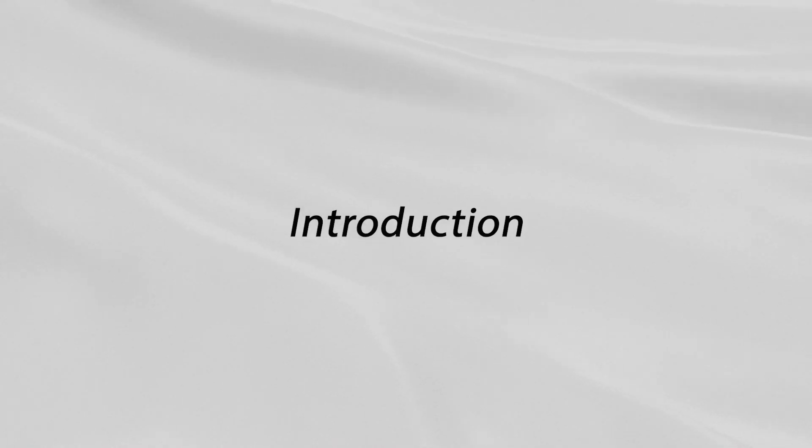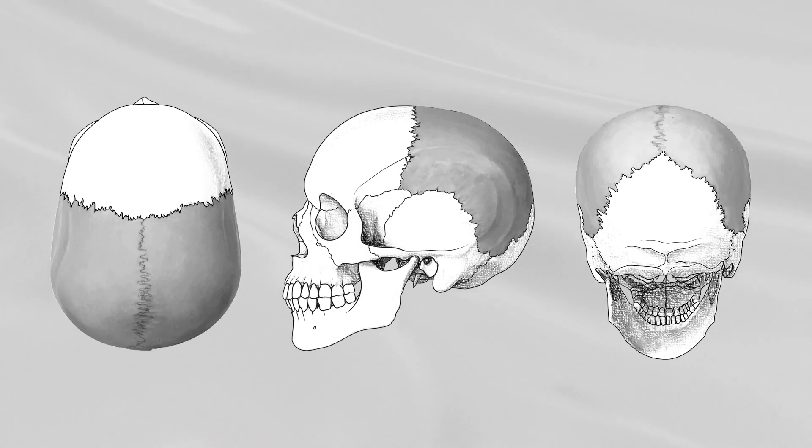Parietal Bone. The parietal bones are paired bones. They form, by their union, the sides and roof of the cranium. Each bone is irregularly quadrilateral in form and has four borders and four angles.